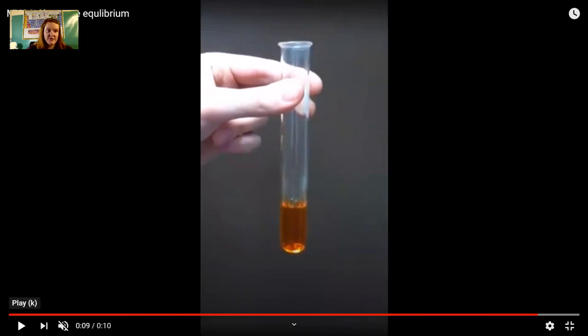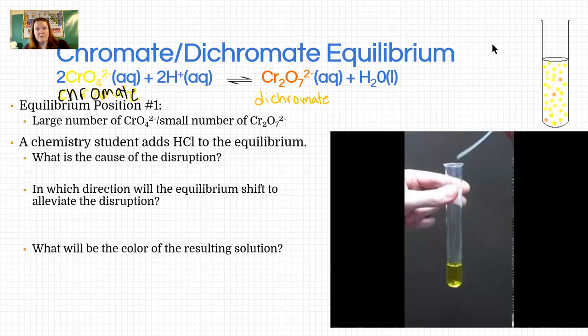So here's our chromate solution. As you can see, quite yellow. A student adds hydrochloric acid. And it turns orange. So what we just observed.